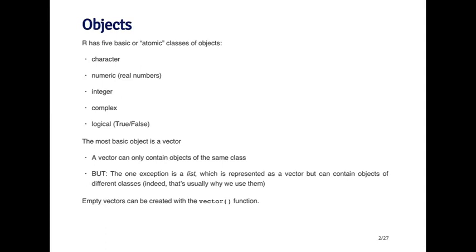The most basic object in R is what's called a vector. A vector can contain multiple copies of, for example, a single type of object. So it can have a vector of characters or a vector of integers.